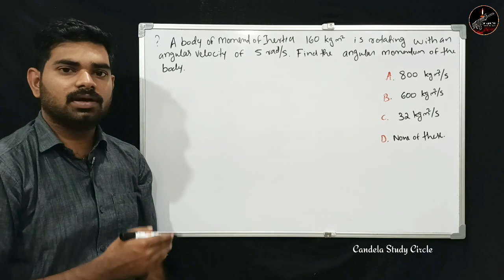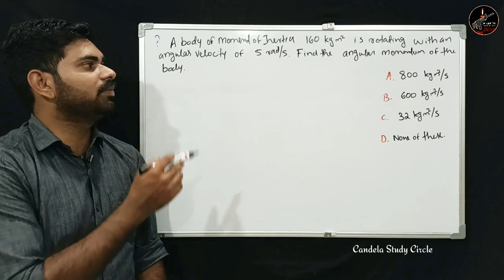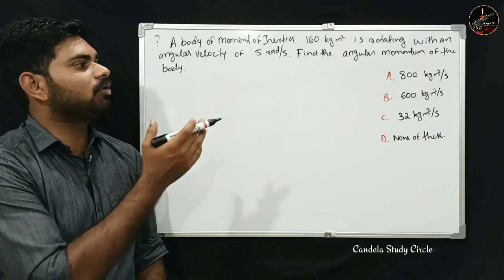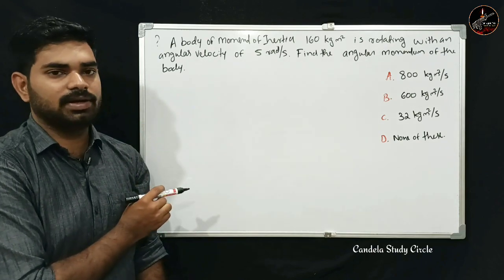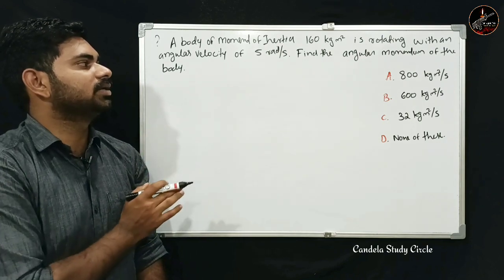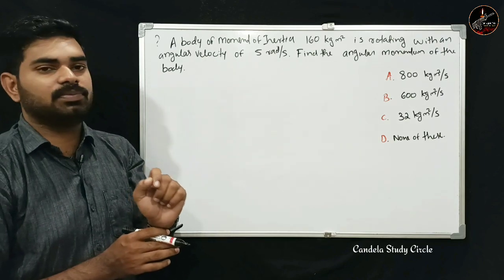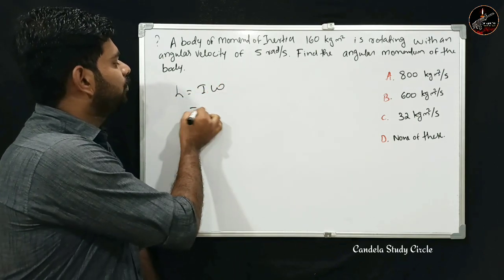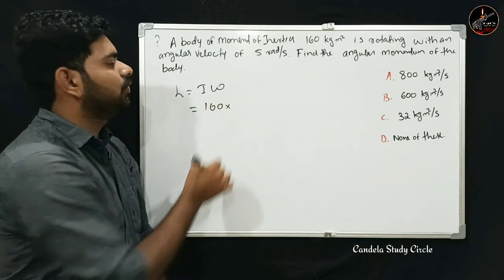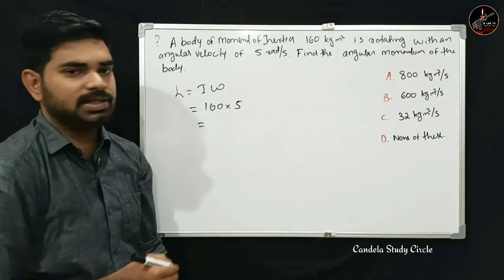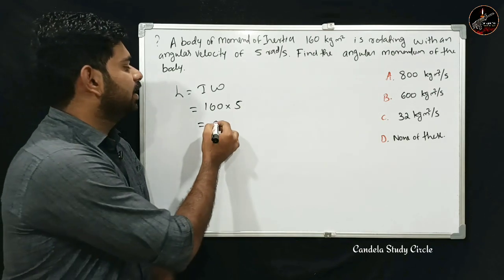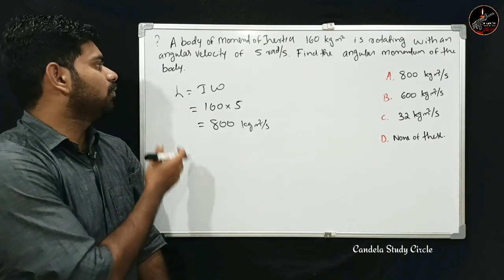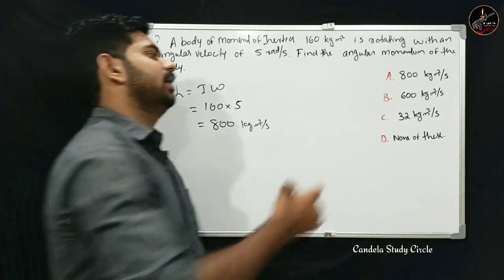A body of moment of inertia 160 kilogram meter square is rotating with an angular velocity of 5 radian per second. Find the angular momentum. Angular momentum L equals I times omega equals 160 into 5 equals 800 kilogram meter square per second. Option A is correct.